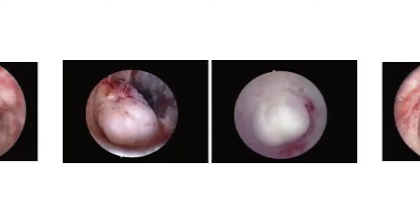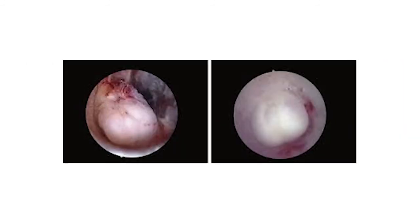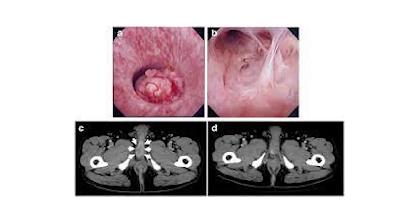Here is an image of carcinoma of the urethra clearly seen; there is a polyp type shown. Here is a papilloma seen in the urethra. Further images show carcinoma of the urethra from different views, with CT pictures and another picture clearly showing the carcinoma.